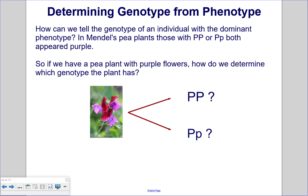Determining genotype from phenotype. How can we tell the genotype of an individual with the dominant phenotype?